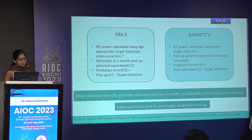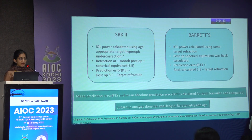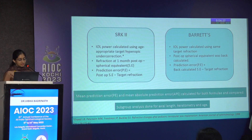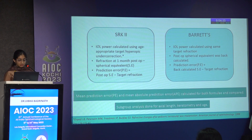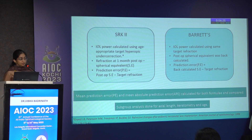For the SRK2 formula, IOL power was calculated using age-appropriate targeted hyperopic under-correction. After surgery, at one month post-op refraction was done and the spherical equivalent was recorded. The predicted error for SRK2 was measured as the post-op spherical equivalent minus the target refraction. For Barrett's, the IOL power was calculated using the same target refraction, but the post-op spherical equivalent was back-calculated. The predicted error for Barrett's was thus the back-calculated spherical equivalent minus the target refraction.